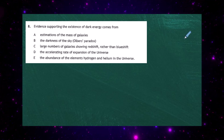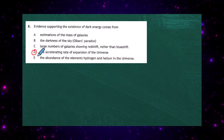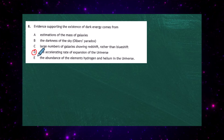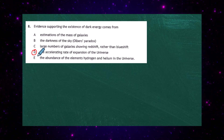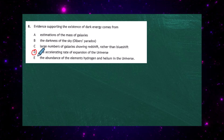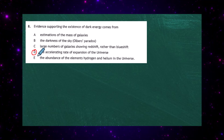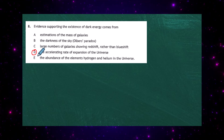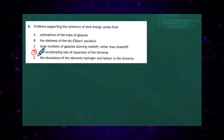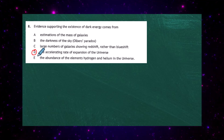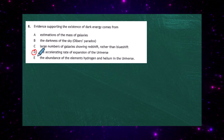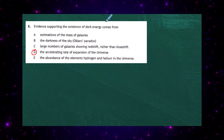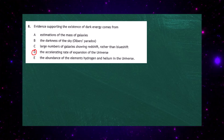So the answer to number 8 is D. Looking at C — large numbers of galaxies showing redshift rather than blueshift — that just tells us galaxies are moving away from us and space-time between is expanding, but doesn't specifically support dark energy. The darkness of the sky points to the Big Bang theory, and estimation of the mass of galaxies relates to dark matter. The question asks about dark energy, so we point to the accelerating rate of expansion.